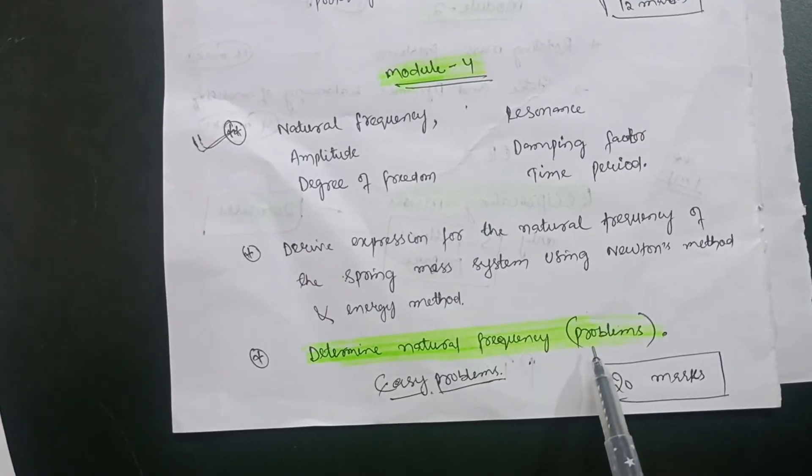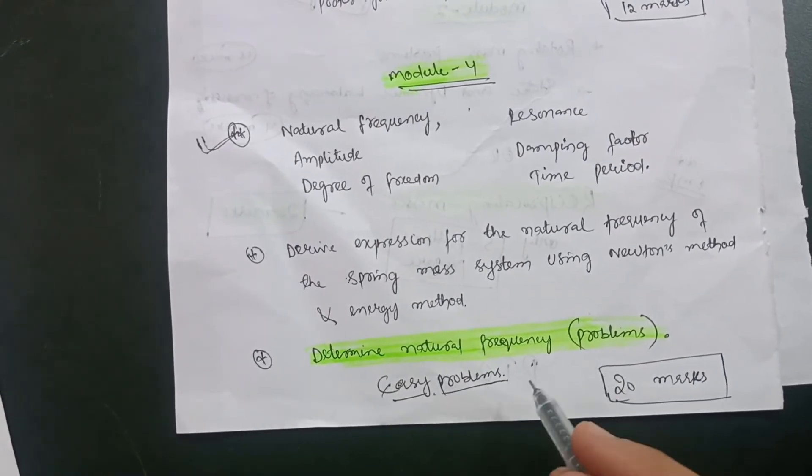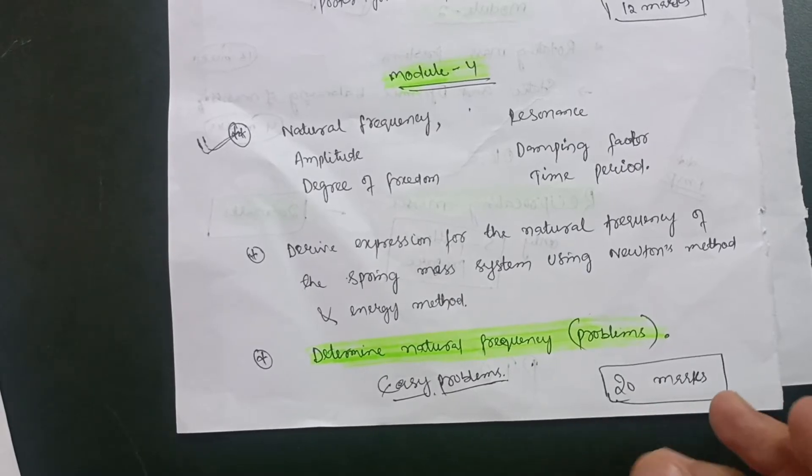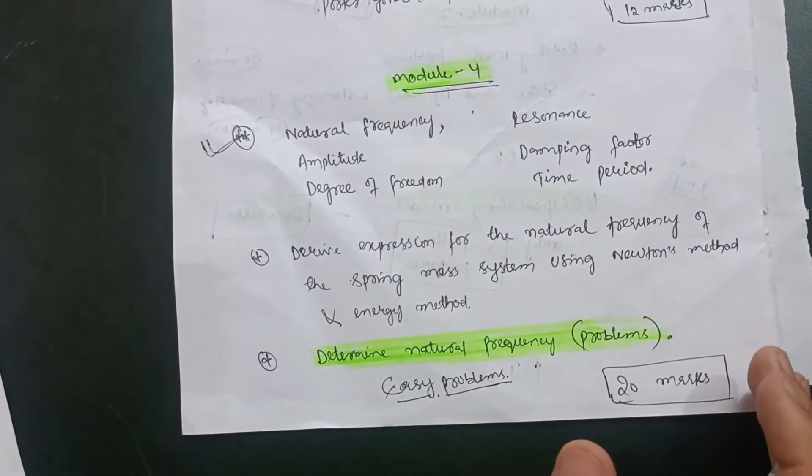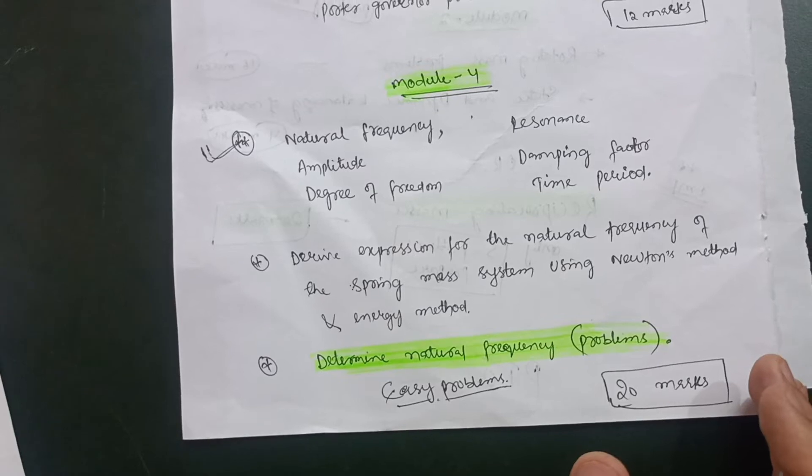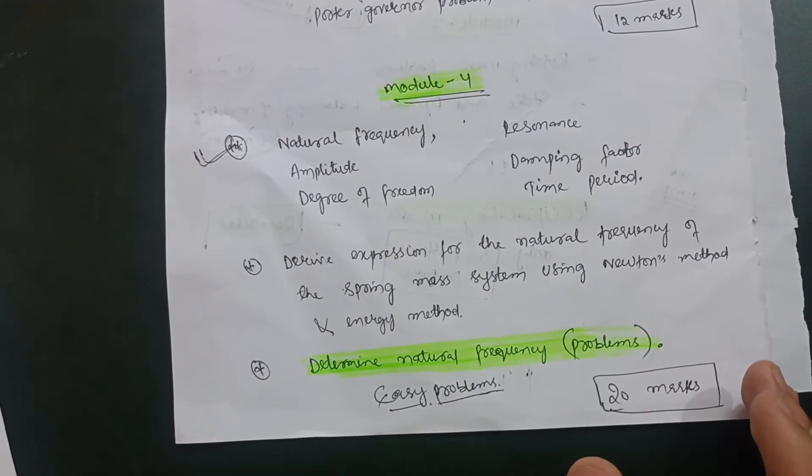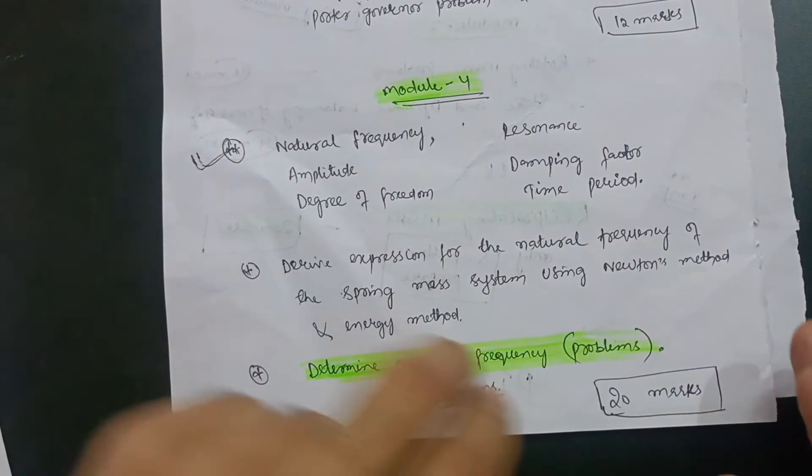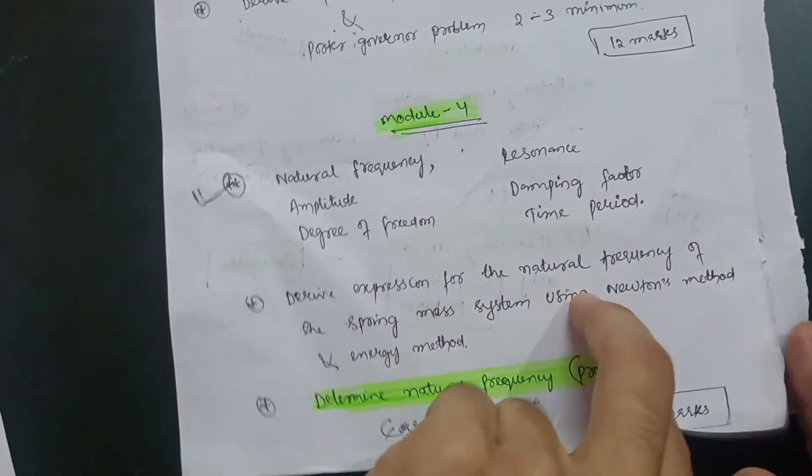On this particular derivation there are some questions. They may ask you to determine natural frequency. Problems are there which are very easier. I hope you will get 20 marks in this particular module if you just go through any textbook or Sunstar to prepare. You can easily score 20 marks.